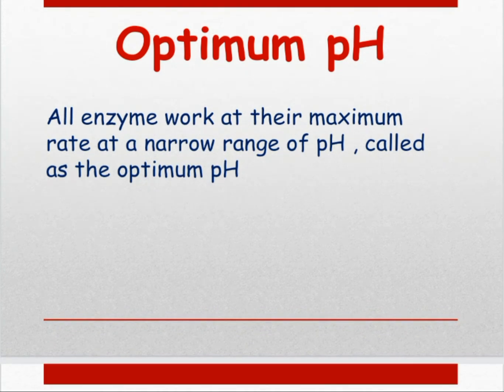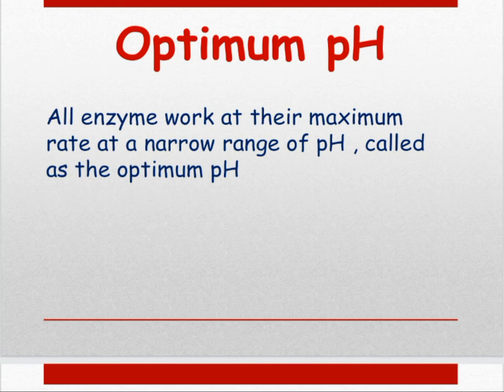Optimum pH: all enzymes work at their maximum rate at a narrow range of pH called the optimum pH. Different enzymes work at different pH values. For example, pepsin present in the stomach always acts in an acidic medium — HCl is present in our stomach — while enzymes present in the intestine work in an alkaline medium. The optimum pH is that pH at which the enzyme works at its maximum rate.